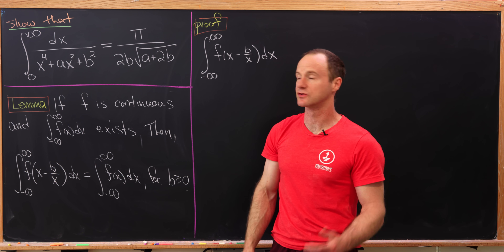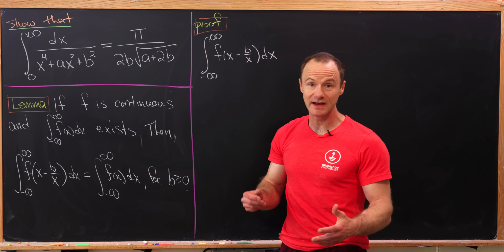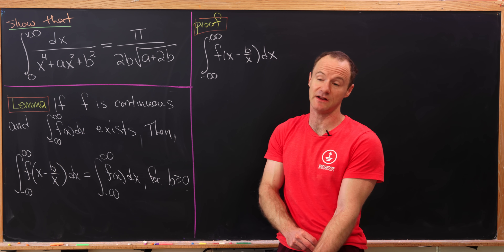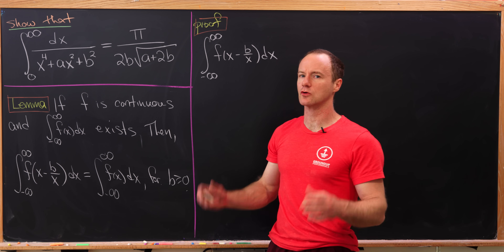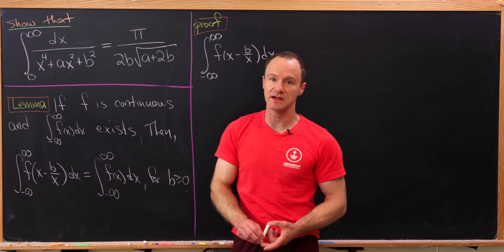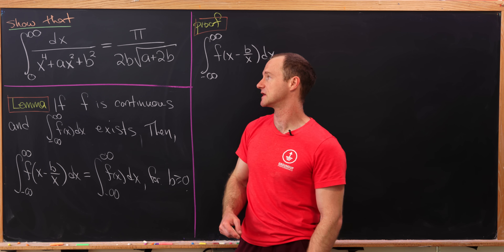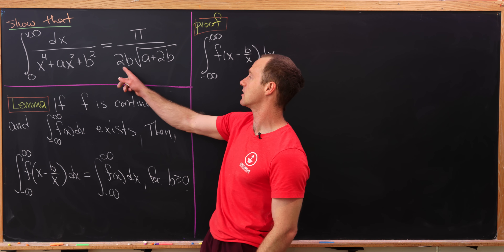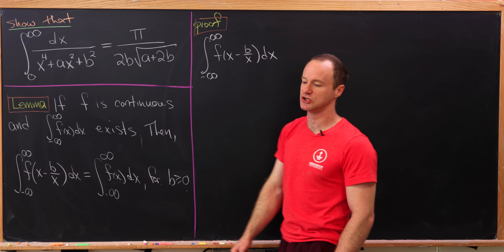Today we're going to prove a nice integral identity. I'm proving this in a standalone video, but it's likely that it'll be applied in a video coming up in the future. So let's see our final goal for this video: the integral from zero to infinity of dx over x to the fourth plus ax squared plus b squared. We want to show that that's equal to pi over 2 times b times the square root of a plus 2b.